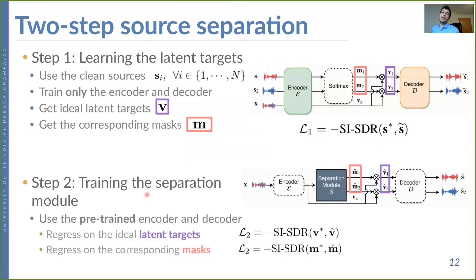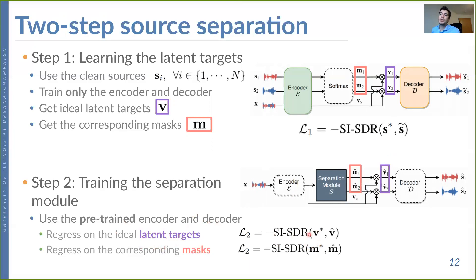At the second step, we train the separation module to perform separation on the latent space. We regress on the ideal latent targets extracted from the first step, or the corresponding masks, using the same negative scale-invariant SI-SDR loss.